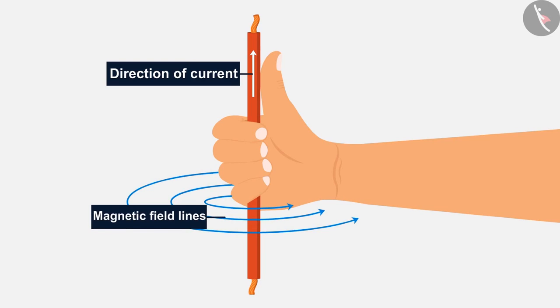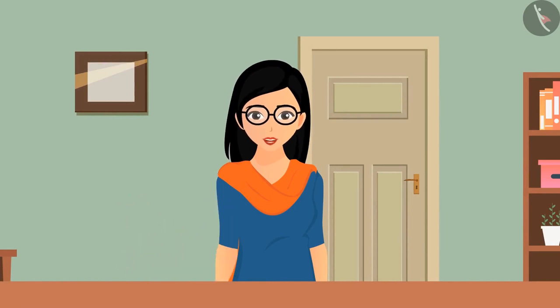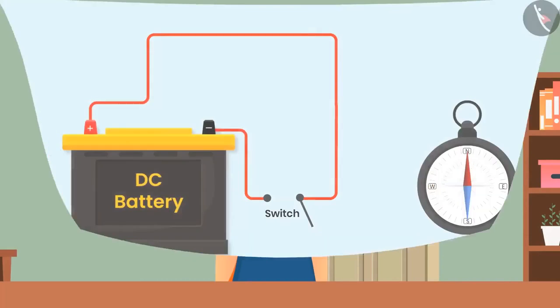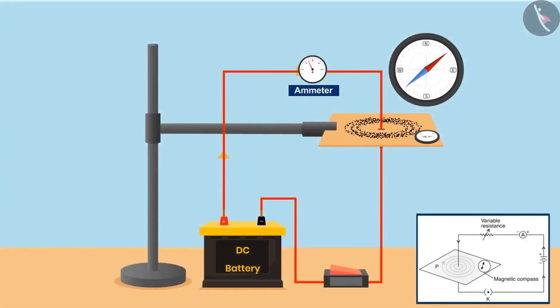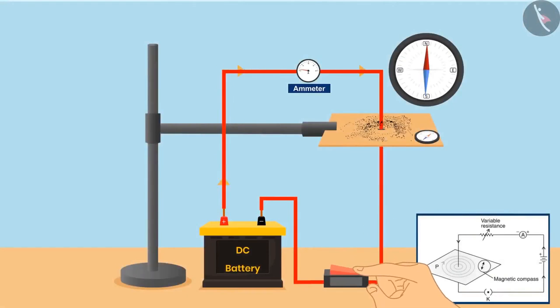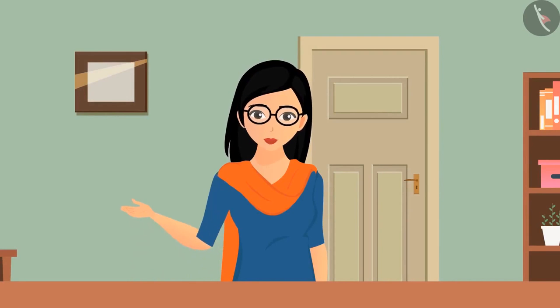Let's summarize what we have learned today. A current carrying conductor acts like a magnet. If the electric current is increased, the strength of magnetic field lines also increases. The strength of magnetic field lines is directly proportional to the thickness of the current carrying conductor.